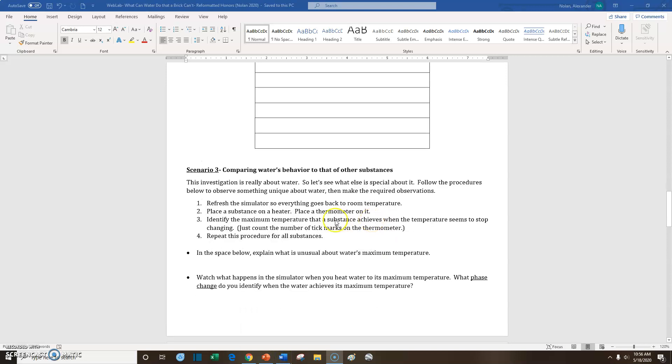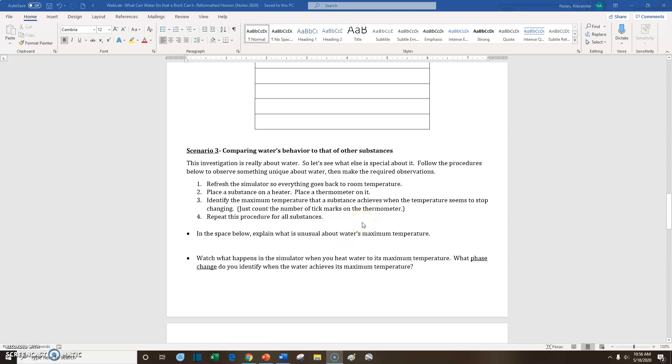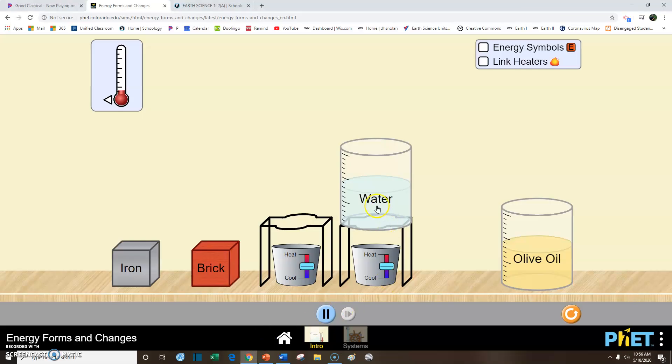So let's jump over here to Scenario 3. In Scenario 3, what we're going to be doing is we're going to place each substance on the heater. We'll put the thermometer on it, and we're going to see the temperature at which the substance quits changing temperature. And you can count the tick marks on the thermometer. We're going to do this for each substance. So if we jump over here, I've already gone ahead and placed my water on the heater, and we can do these two at a time.